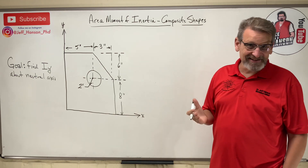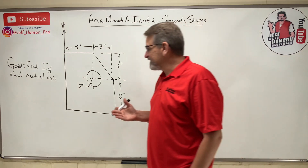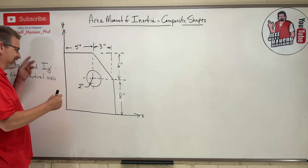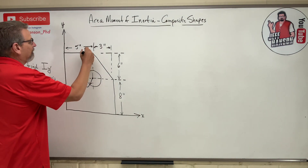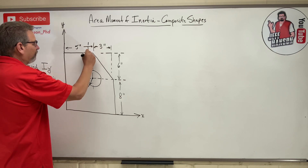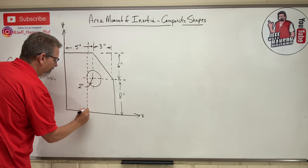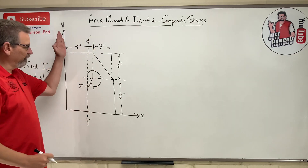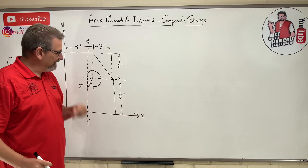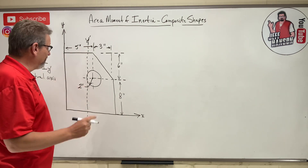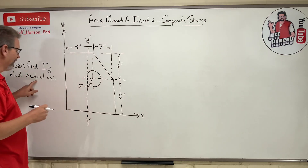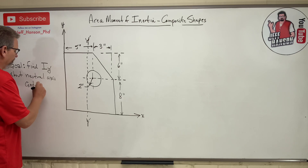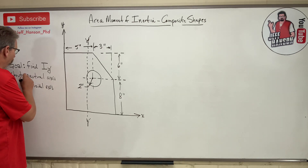Instead of going on a horizontal axis, we're trying to find the moment of inertia on this vertical axis. I'm going to say I don't know where it is, but I'll place it approximately here. I'll put a prime on it — here's the y-axis and there's the x-axis. So step 1 is finding out where that axis, the neutral axis, which is also called the centroidal axis, lives.